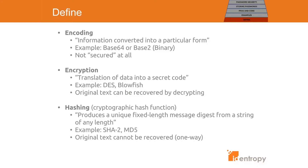Encryption on the other hand is a way of securing information. In fact it's defined as a translation of data into a secure code. Popular examples of encryption methods are DES, Blowfish, and there are many many others. The benefit of encryption is that with the right information, also known as a key, you can use that secured output to get back to the original input message. In other words, encryption is a two-way method that allows decryption to retrieve the original message.